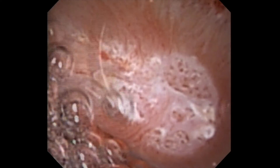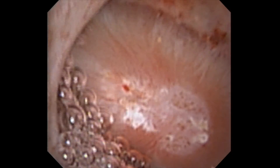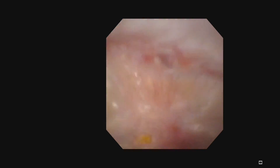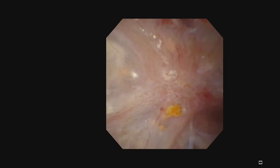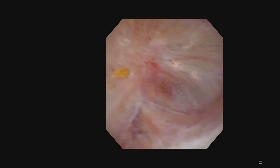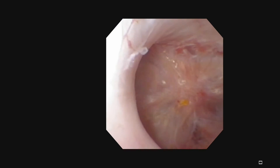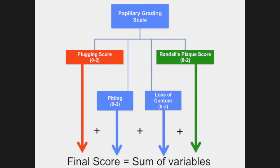Having endoscopically mapped over 300 patients with nephrolithiasis, our research team has identified a number of distinct and recurring papillary abnormalities. Herein we present a grading scale to describe the variable papillary appearances seen at the time of endoscopy. The papillary grading scale is divided into four domains: plugging, pitting, loss of contour, and the amount of Randall's plaque.